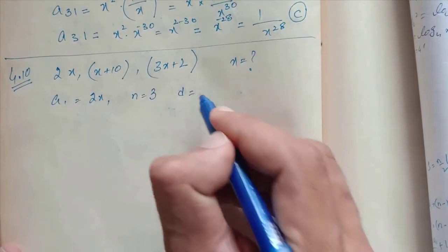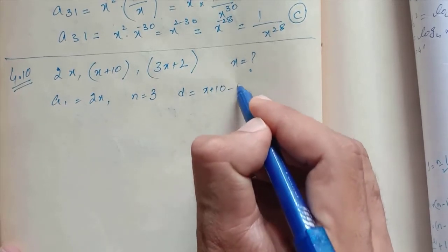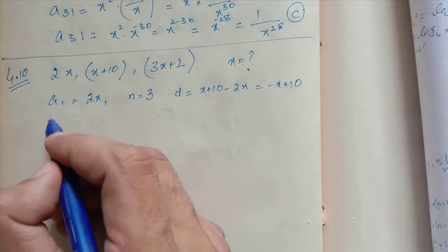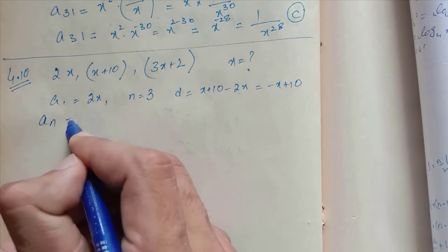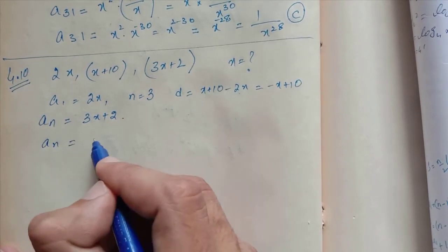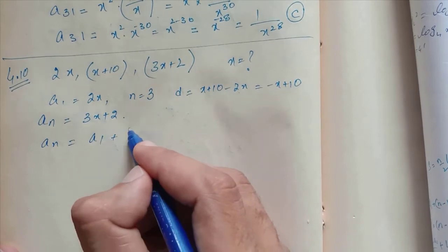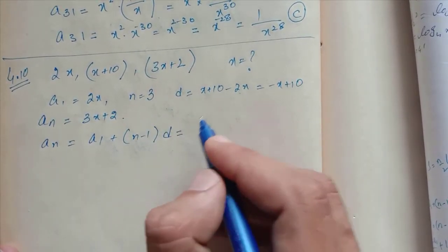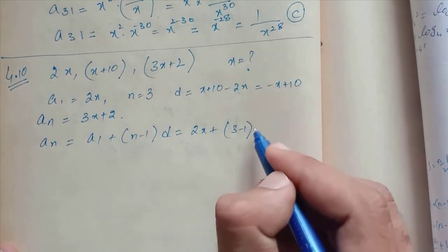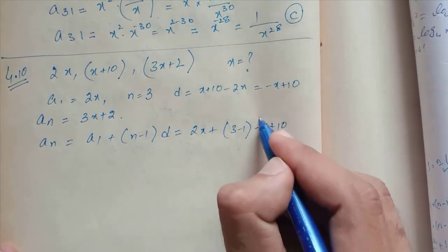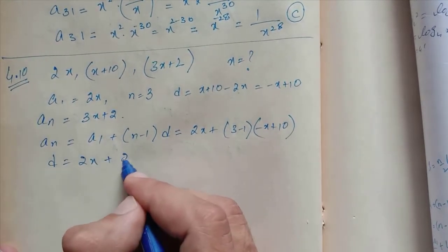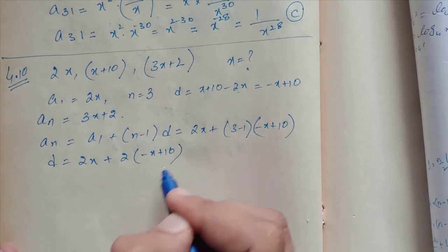d equals (x+10) minus 2x, this equals -x+10. So an = 3x+2. Formula is an = a1 + (n-1)d. This equals 2x + (3-1)(-x+10), so 2x + 2(-x+10).